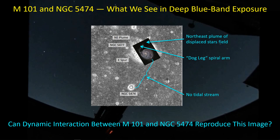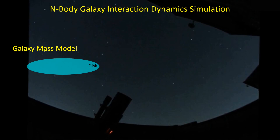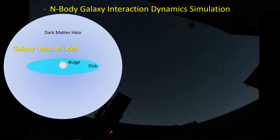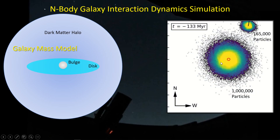Can the dynamical simulation actually reproduce some of these features? An N-body simulation requires that you divide up a galaxy into particles of mass — there's the disk, the bulge, and the biggest part of the mass, which is the dark matter halo. The authors have put in about one million mass particles representing M101, and 165,000 particles for NGC 5474, which is a much smaller galaxy. All of these particles have an initial position and speed so that they are orbiting the core of their respective galaxy. However, the offset core of NGC 5474 today was difficult to reproduce, so it's not fully included in their simulation.